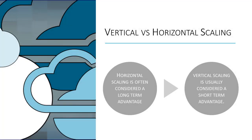So which type of scaling is better? There isn't necessarily a real answer to this question. Horizontal scaling — scaling out or scaling wide — is often considered a long-term advantage, while vertical scaling, or scaling up, is typically considered a short-term advantage. The reason is pretty simple: you can typically add as many servers as you need to your infrastructure. However, at some point, hardware upgrades become implausible — it gets expensive and repetitive.